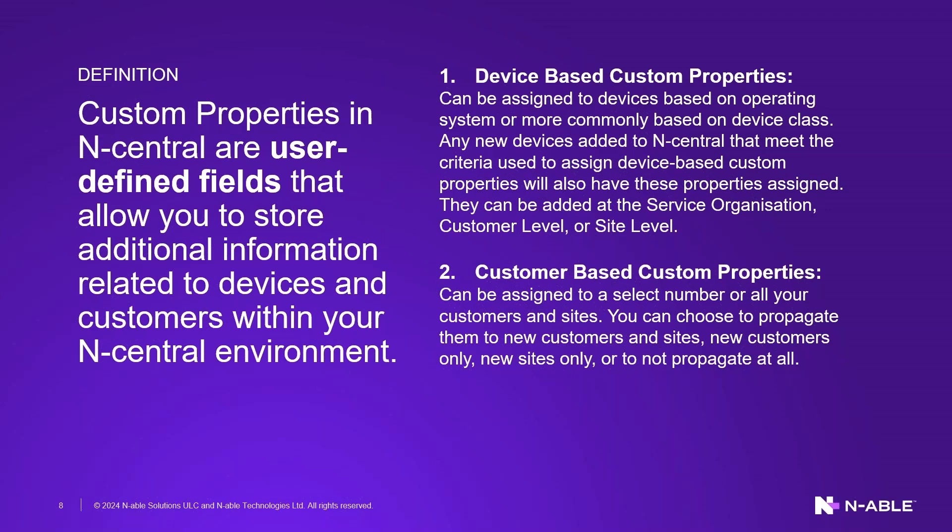Customer-based custom properties — which we call custom org properties — can be assigned to a select number or all of your customers and sites. You can individually choose customers, for example if an SLA is part of your platinum package. You can choose to propagate them to new customers, propagate to some customers, all sites, no sites — or not propagate them at all.